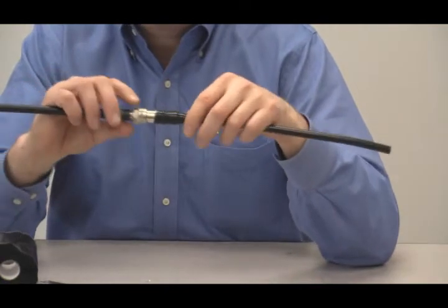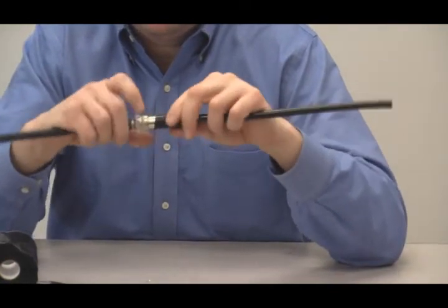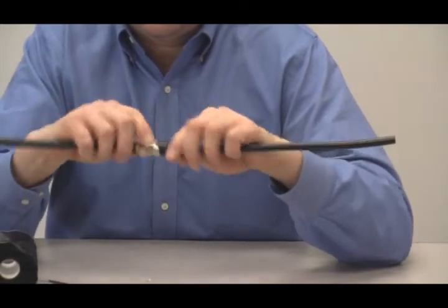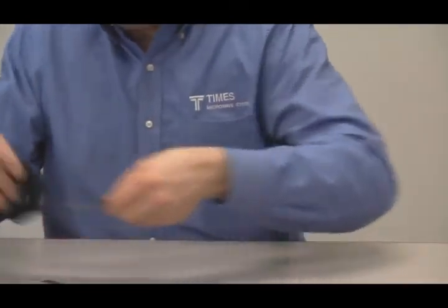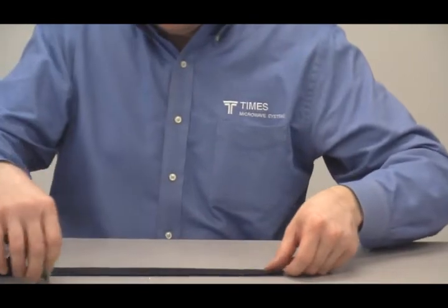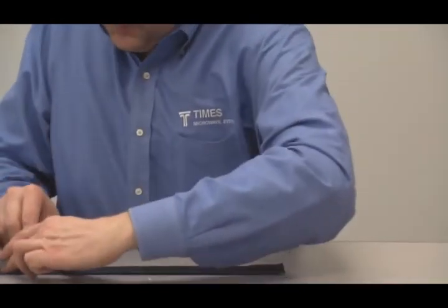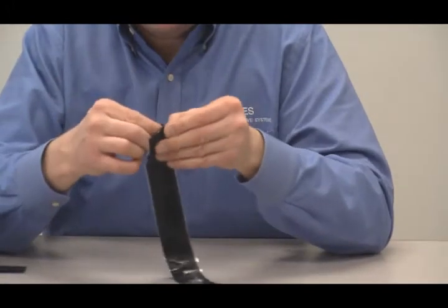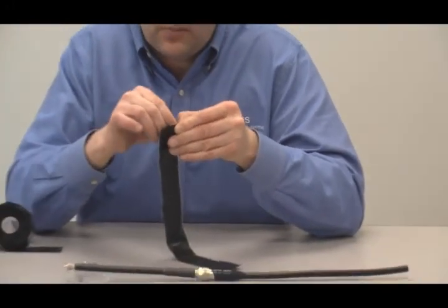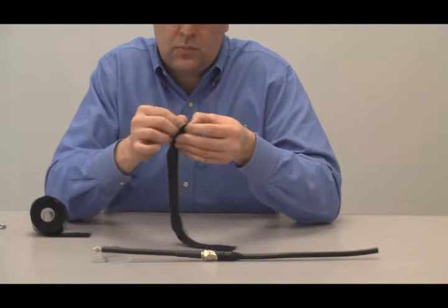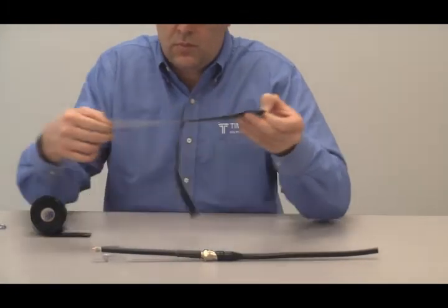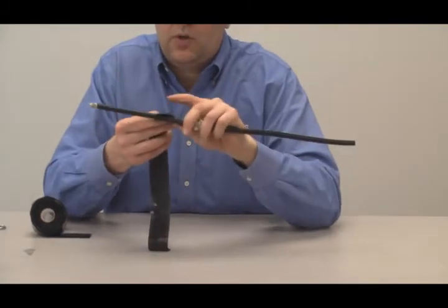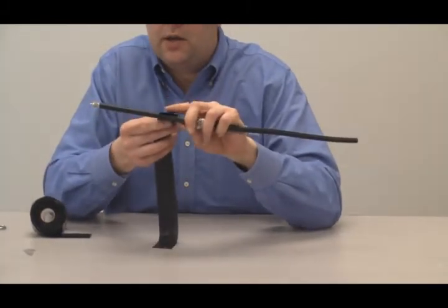Now we'll mate these two pieces together. And we'll take roughly about a foot of the silicone tape. Again, we'll peel away the backing. We'll get started just a little beyond, about an inch beyond that atom boot.